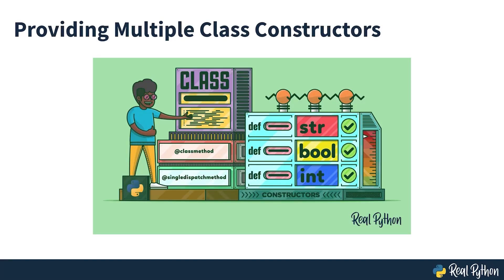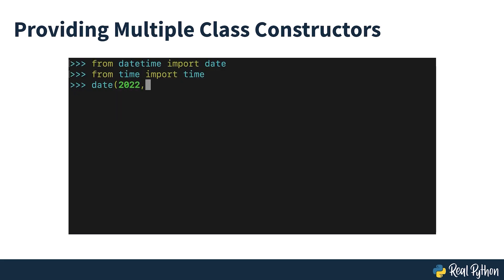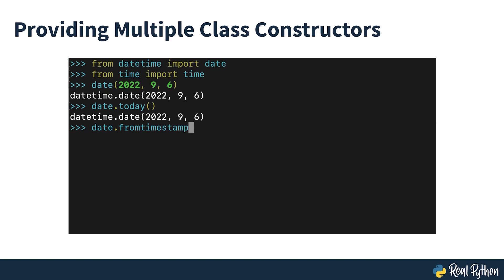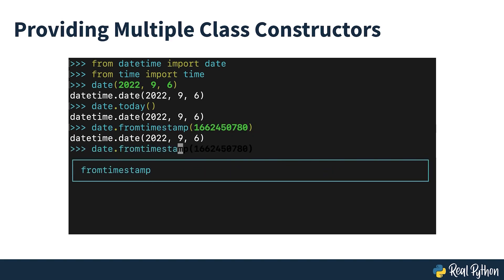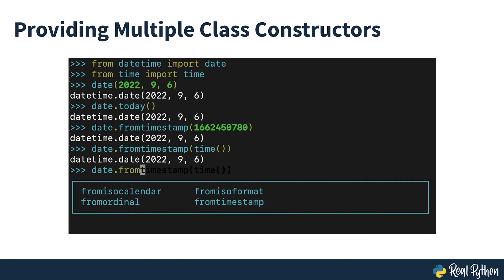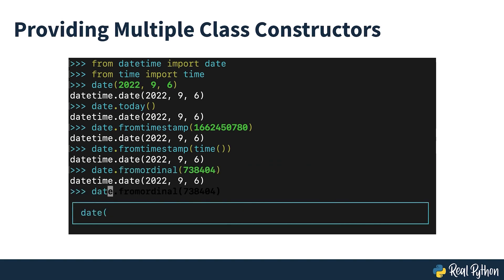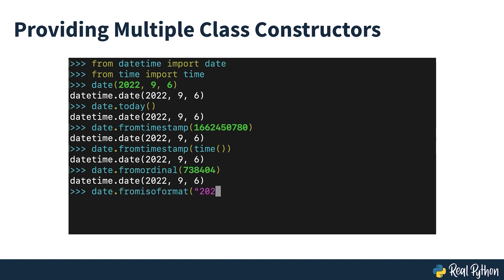Providing multiple constructors in your Python classes. Sometimes you need to write a Python class that provides multiple ways to construct objects — in other words, you want a class that implements multiple constructors. This kind of class comes in handy when you need to create instances using different types or numbers of arguments. Having the tools to provide multiple constructors will help you write flexible classes that can adapt to changing needs.